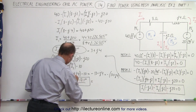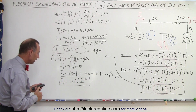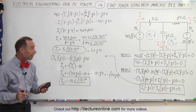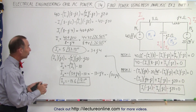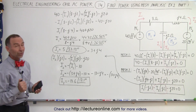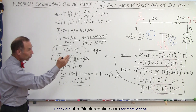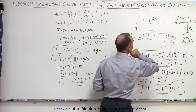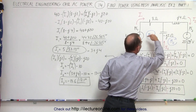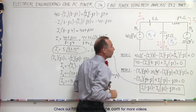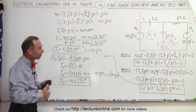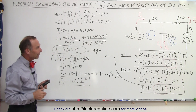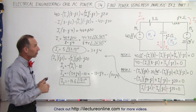We already have I1 and I2 in magnitude and phase angle format. In Part 2, we're going to find the voltages across each of the components, and then calculate the average power — either provided or absorbed — by all five components.